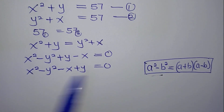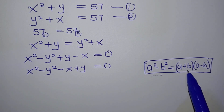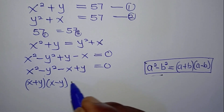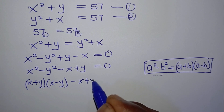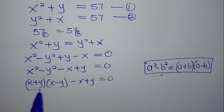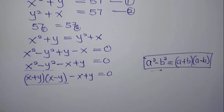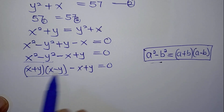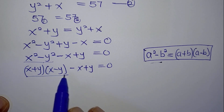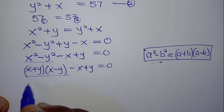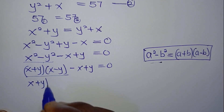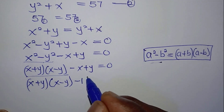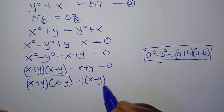Our a is x and our b is y. So this can be expressed as (x + y)(x − y) minus x plus y equals zero. That is the whole of this expression equals this. So here we can factorize: we rewrite the equation as (x + y)(x − y), and we bring minus one outside, which gives us x minus y equals zero.